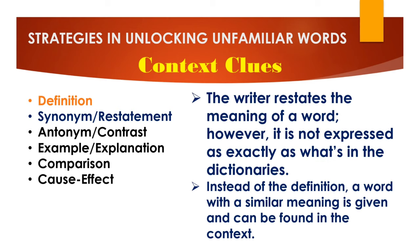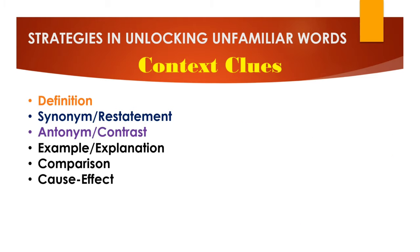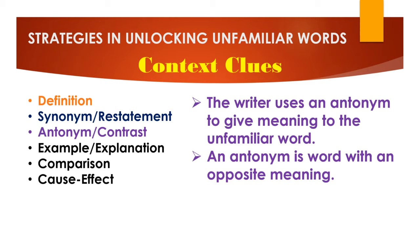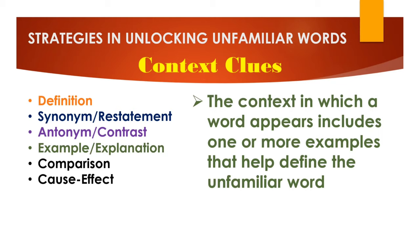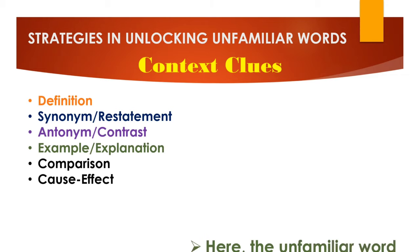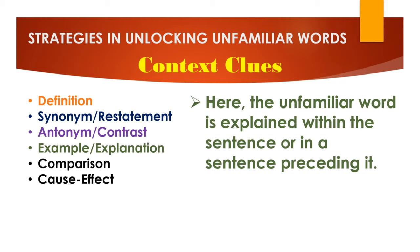Then there's restatement — the writer restates the meaning of a word, however it is not expressed exactly as in the dictionaries; instead, a word with a similar meaning is given and can be found in the context. Next, antonym — the writer uses an antonym to give meaning to the unfamiliar word. An antonym is a word with an opposite meaning. Next we have example — the context in which a word appears includes one or more examples that help define the unfamiliar word.